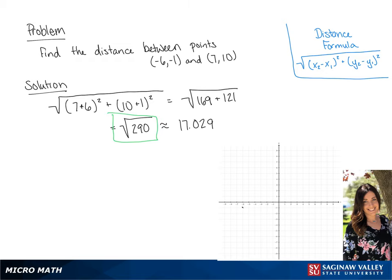We're going to plot our line using the points that we had in the original problem. The distance between these two points is going to be the square root of 290.